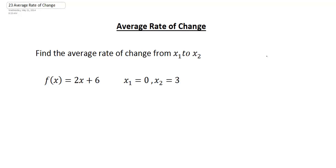This video is going to look at calculating the average rate of change. The first example says we want to find the average rate of change from x1 to x2. We're given the function f of x equals 2x plus 6, with x1 equals 0 and x2 equals 3.